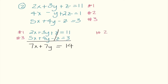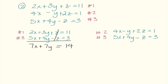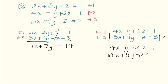Next, I'm going to use equation 2 and equation 3. Equation 2 was 4x minus y plus 2z equals 1, and I have 5x plus 4y minus z equals 3. I want my z's to cancel out again, so I need this z to become negative 2. That means I'm going to multiply equation 3 by 2. I rewrite equation 2 and distribute 2 to equation 3 to get 10x plus 8y minus 2z equals 6. Combining these, I get 14x plus 7y equals 7.